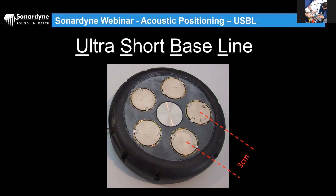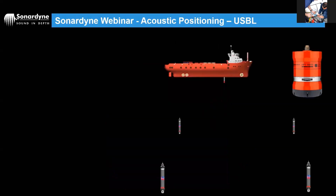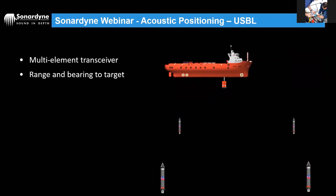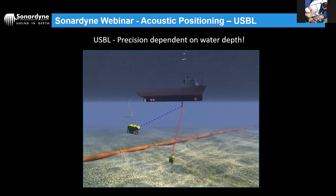USBL is called Ultra Short Baseline because the references are only a few centimeters apart — very different from the hundreds or thousands of meters in LBL. We may use USBL to install the LBL system in the first place, tracking beacons as they're placed on the seabed. The system sends an interrogation and gets responses back. It measures range and bearing to the target, unlike LBL which is a range-range system. USBL measures angles as well.